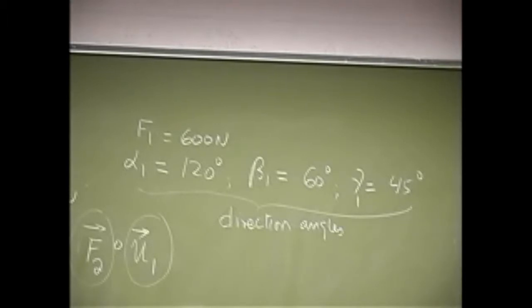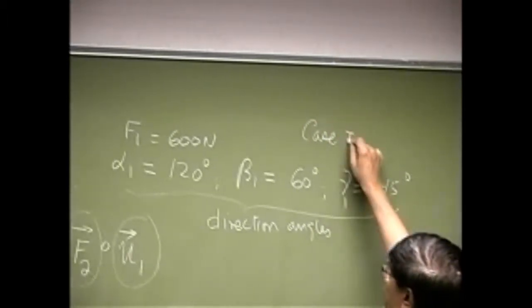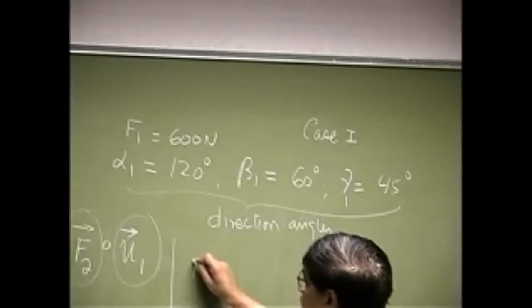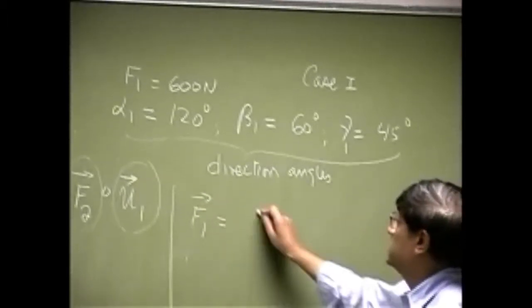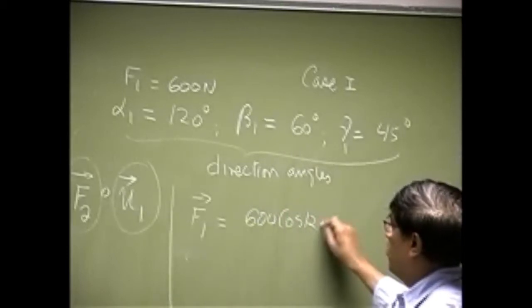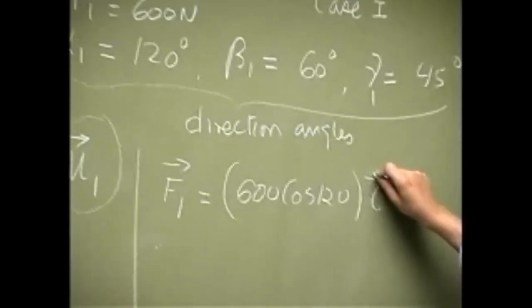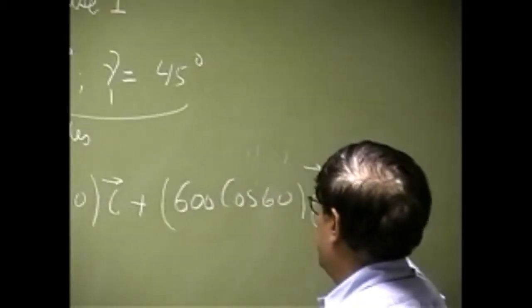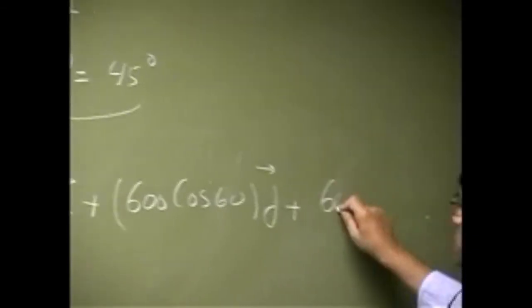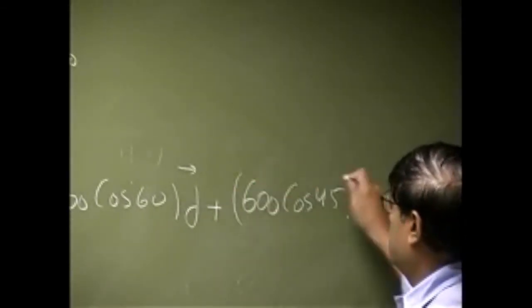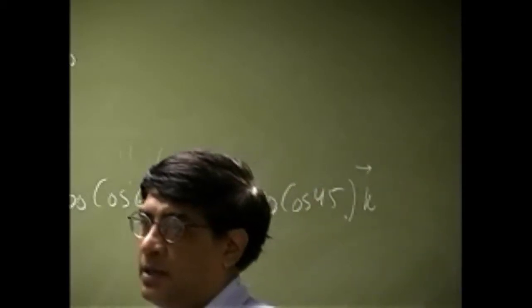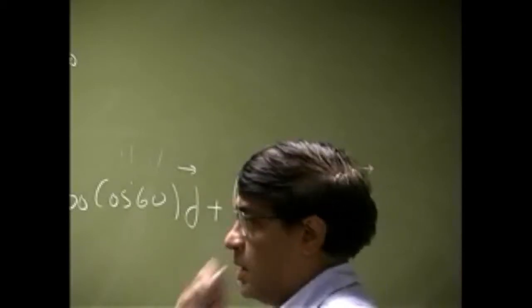And what you have here is something very similar to case 1. You have the force and you have three angles between force and the three different axes. So the force vector itself is going to be 600 cosine 120 times i, then 600 cosine 60 times j, plus 600 cosine 45 times k. You just take the force magnitude and then you multiply that by the direction cosine along x, y, z.